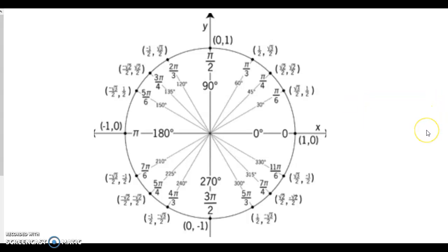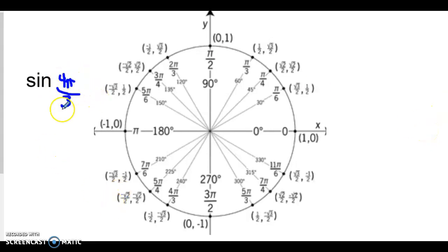If I asked you to find sin(4π/3), well it's over 3, so that means it's going to be this angle right here because the denominator is 3. Sine would be your second one. It goes cosine, sine. So it's going to be √3/2.